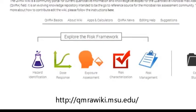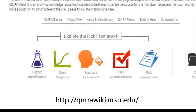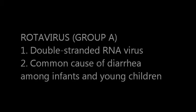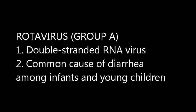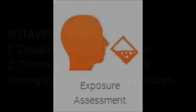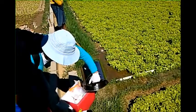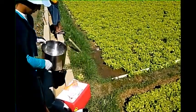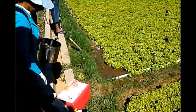Here's how it works. Say we're irrigating lettuce with treated wastewater. First, we choose a reference pathogen — for example, human rotavirus. Then we carry out an exposure assessment. For this case study, we are estimating the exposure that lettuce consumers have to rotavirus.